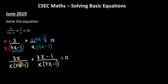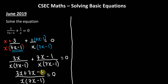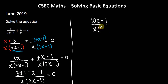Since both fractions share the same denominator, we combine them into one fraction. The numerator becomes 3x plus 7x minus 1, over the common denominator x times (7x minus 1), all equal to 0. Simplifying the like terms in the numerator: 3x plus 7x is 10x, giving us (10x minus 1) divided by x(7x minus 1) equals 0.